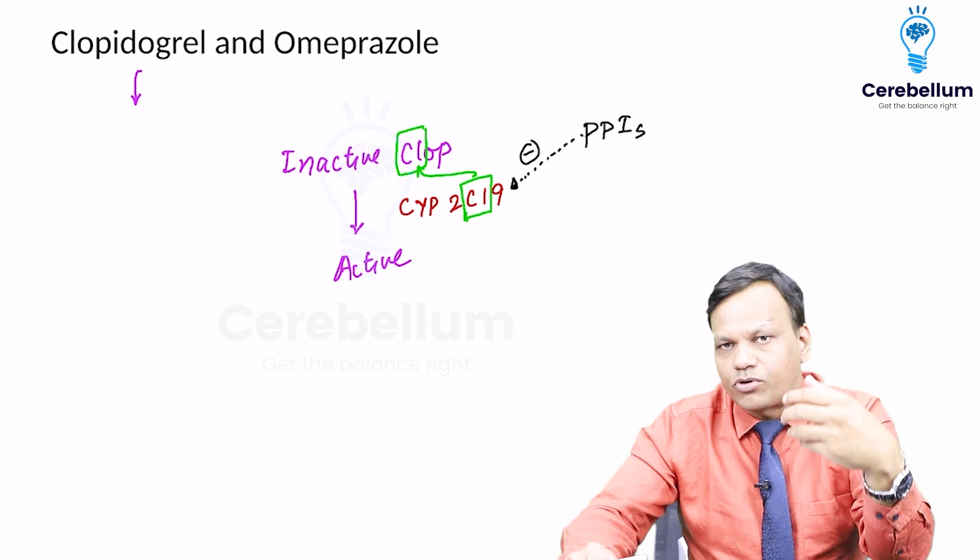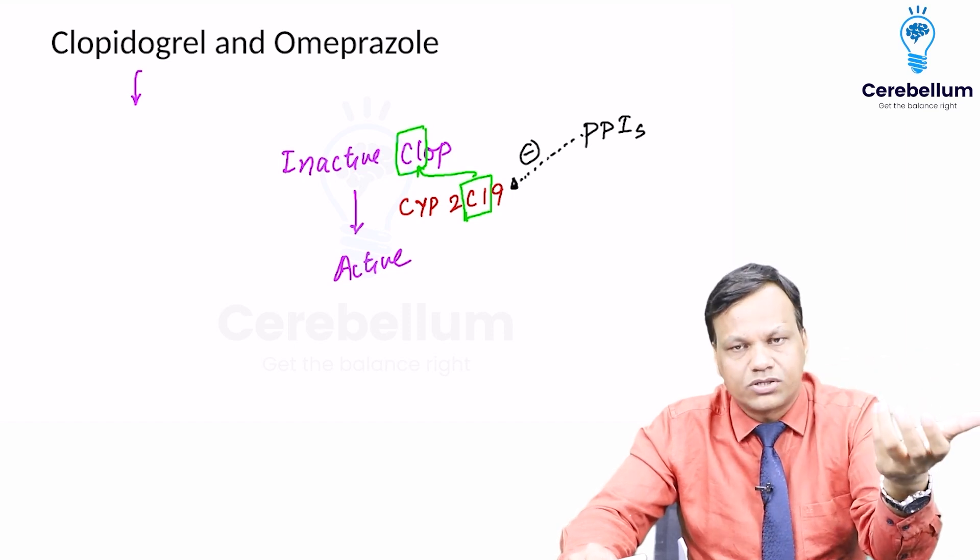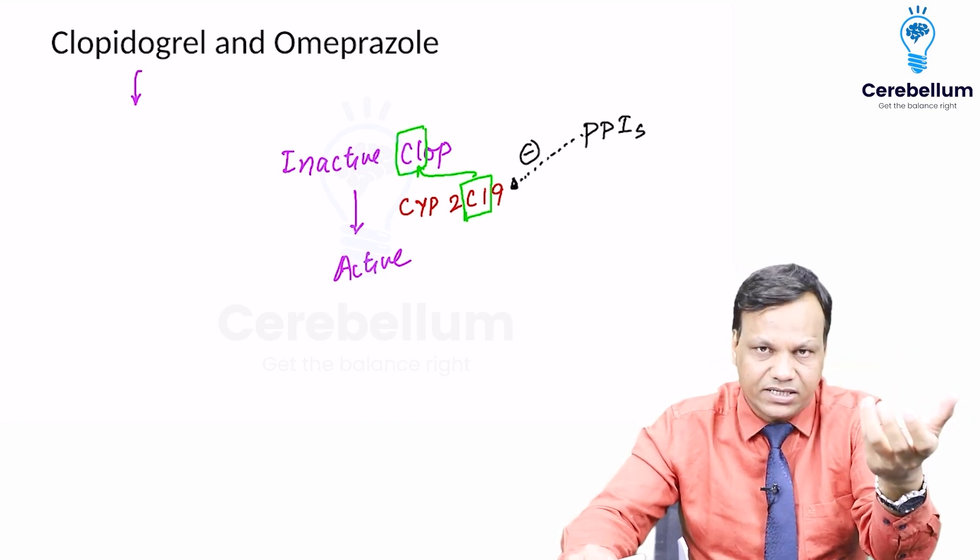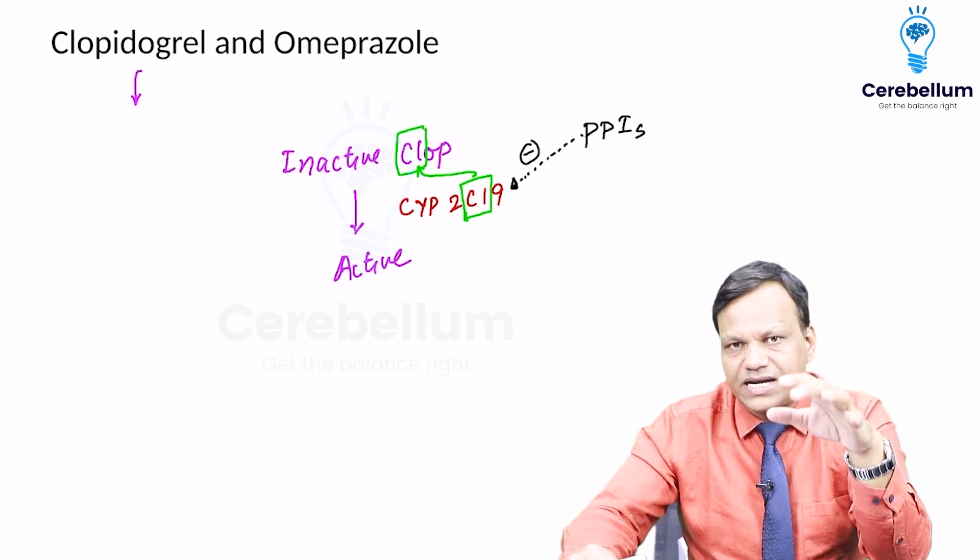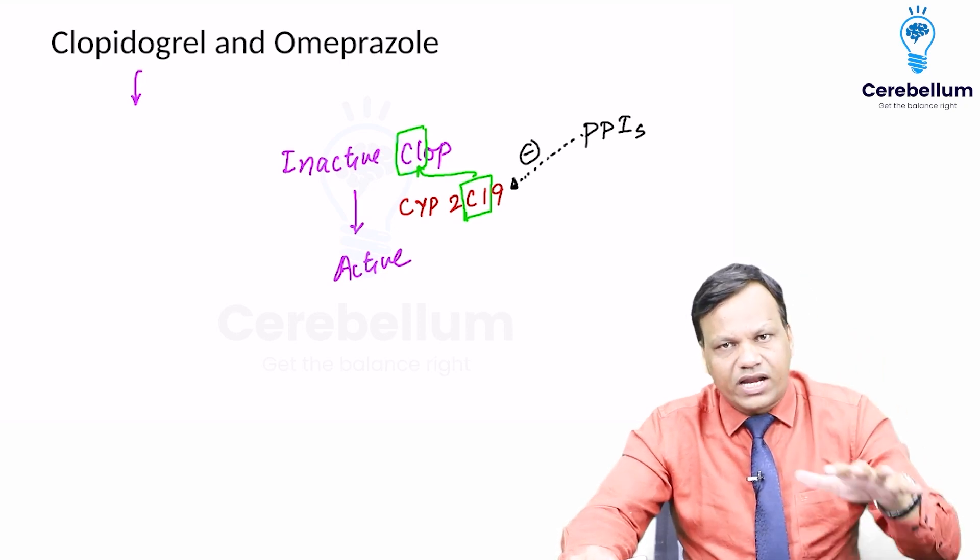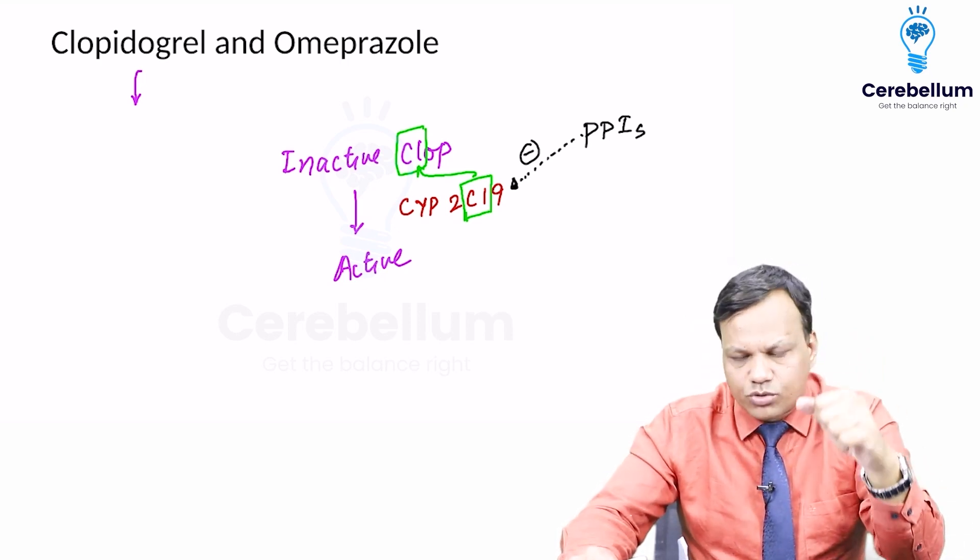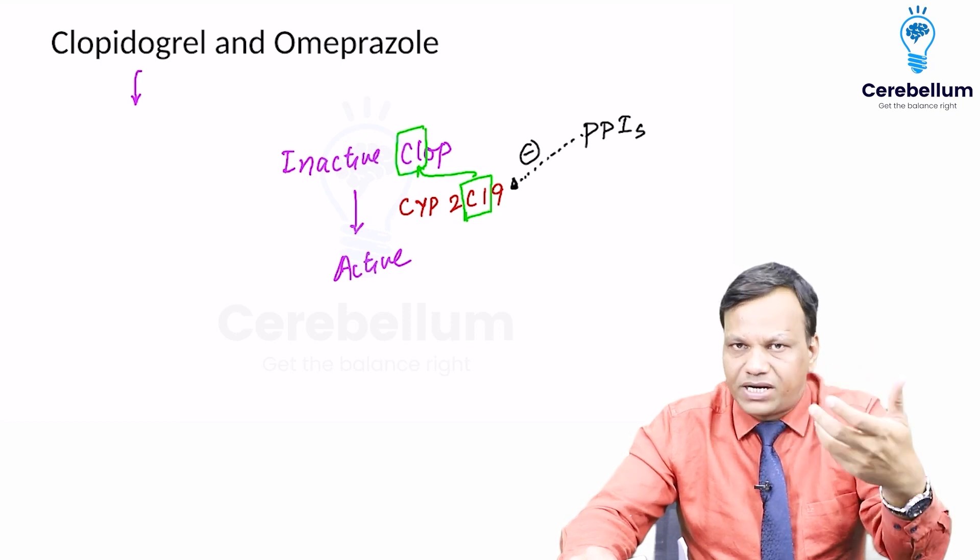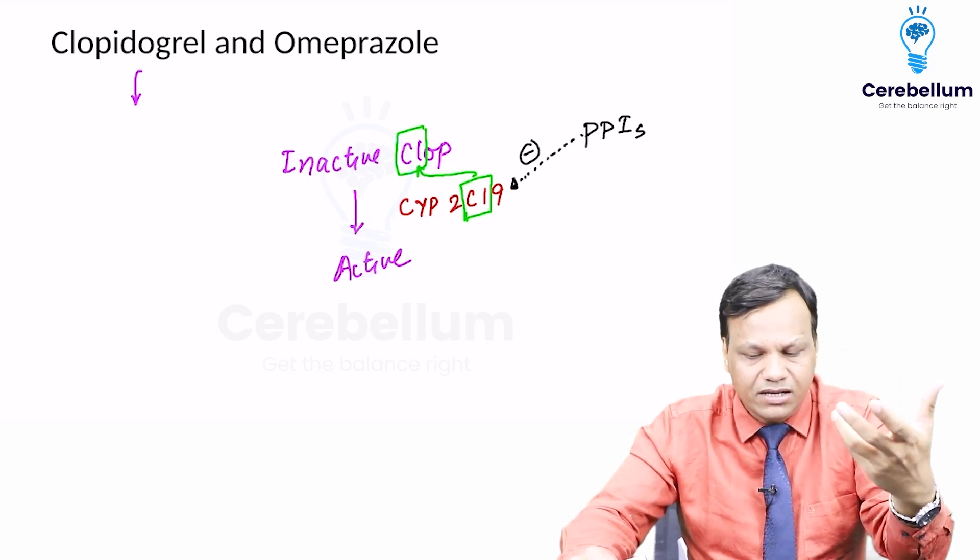And when it does not become active, it cannot protect from MI or stroke, so it will become ineffective basically. So theoretically it is said that clopidogrel, whenever given to any person, we should not give proton pump inhibitors like omeprazole because they inhibit CYP2C19.